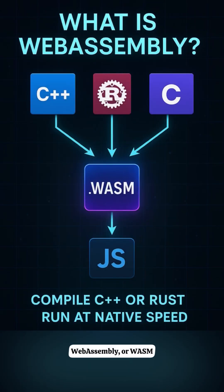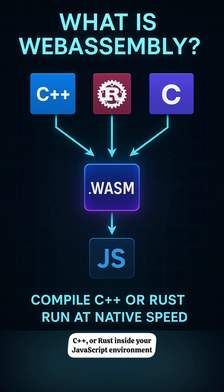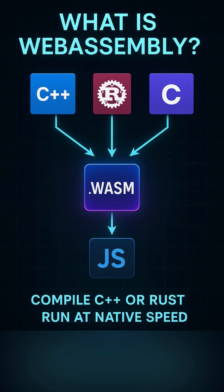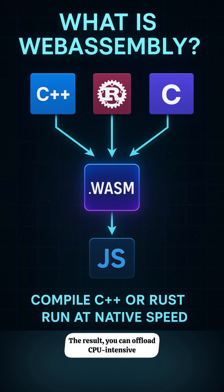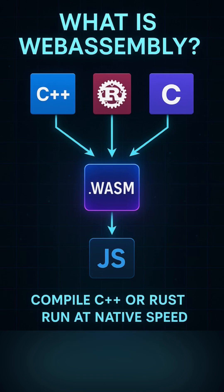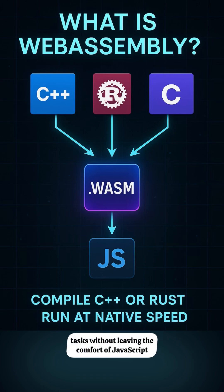WebAssembly, or WASM, lets you run languages like C, C++, or Rust inside your JavaScript environment. It's compiled into a tiny, efficient binary format that executes lightning fast. The result: you can offload CPU-intensive tasks without leaving the comfort of JavaScript.